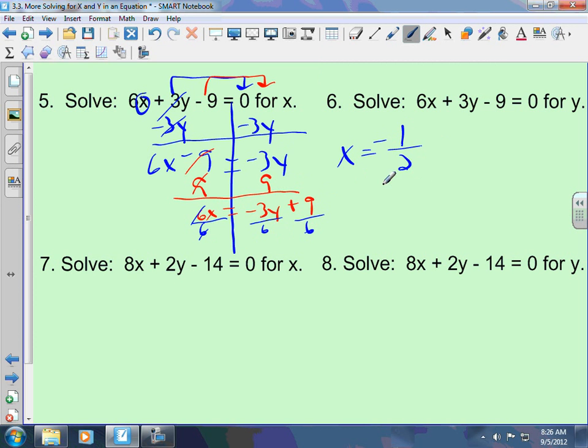3 goes into 3 one time. 3 goes into 6 two times. Put your y there. Plus 9 over 6. 3 can go into both these numbers. So, plus... 3 goes into 9 three times. 3 goes into 6 twice, so plus 3 over 2. That's your answer. 6, 7, and 8 are exactly the same. Just be careful. Here, you're solving for different letters, so be careful of that.